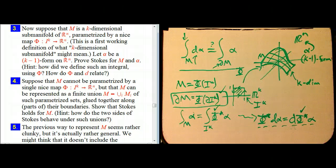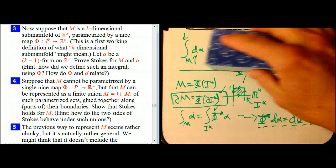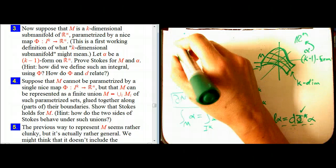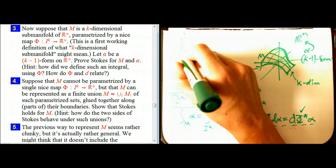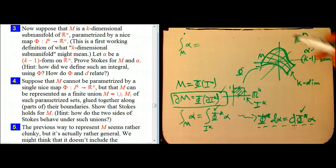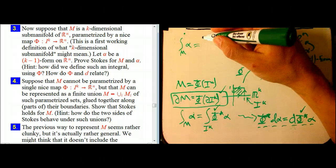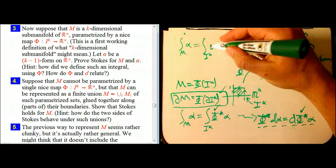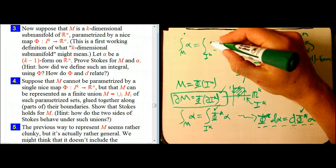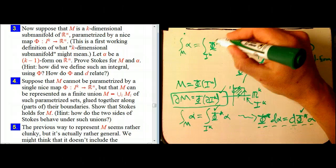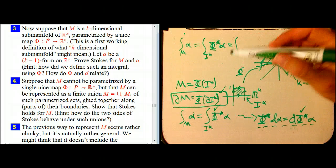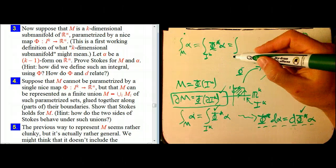And from that, it's going to be really easy. Let me just scoot it up here. We're just going to say that the integral over M of alpha is going to be equal to the integral over IK of the pullback. Pullback through phi of alpha, which is, now I can use Stokes' theorem, because I'm on my model case.